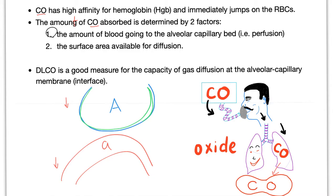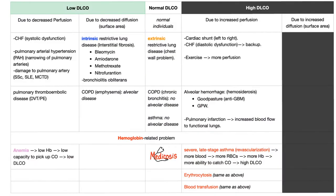What are the causes of increased DLCO? Number one: increase perfusion — increase the blood going to the alveolus. Don't say increase the surface area of the alveoli, because that doesn't exist. In brief: if your alveolar capillary interface is normal, DLCO is going to be normal. If you have a problem with diffusion or perfusion, DLCO is going to be low. If you have super perfusion, DLCO is going to be high. That's it.